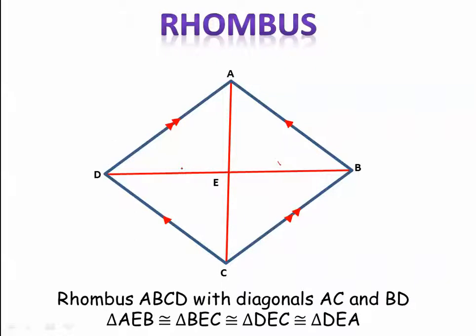So since they bisect each other, that means this segment is congruent to this segment. AE is going to be congruent to EC, just like that, since they bisect each other.